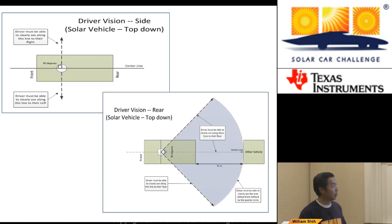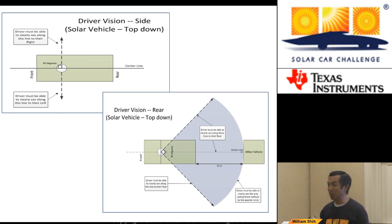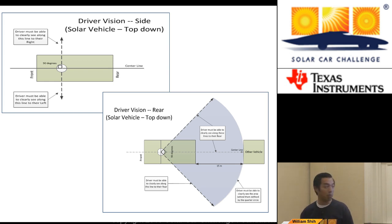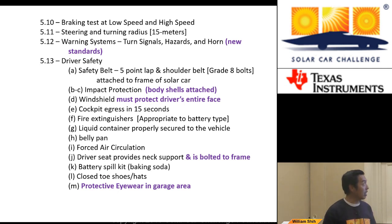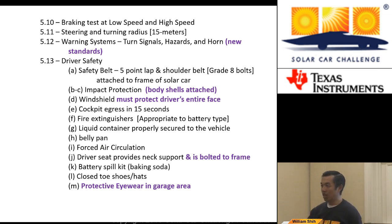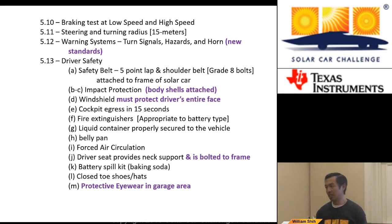For side and rear visibility, rear visibility can be done with a camera, so long as you can see the pattern of 45 degrees off the center line on both sides and 15 meters behind the car. We also talked about braking, the static-dynamic test, and turning radius. Warning system rules specify you must be visible 100 meters behind with brake lights, 30 meters for turn signals, and there's a decibel rating for the horn.